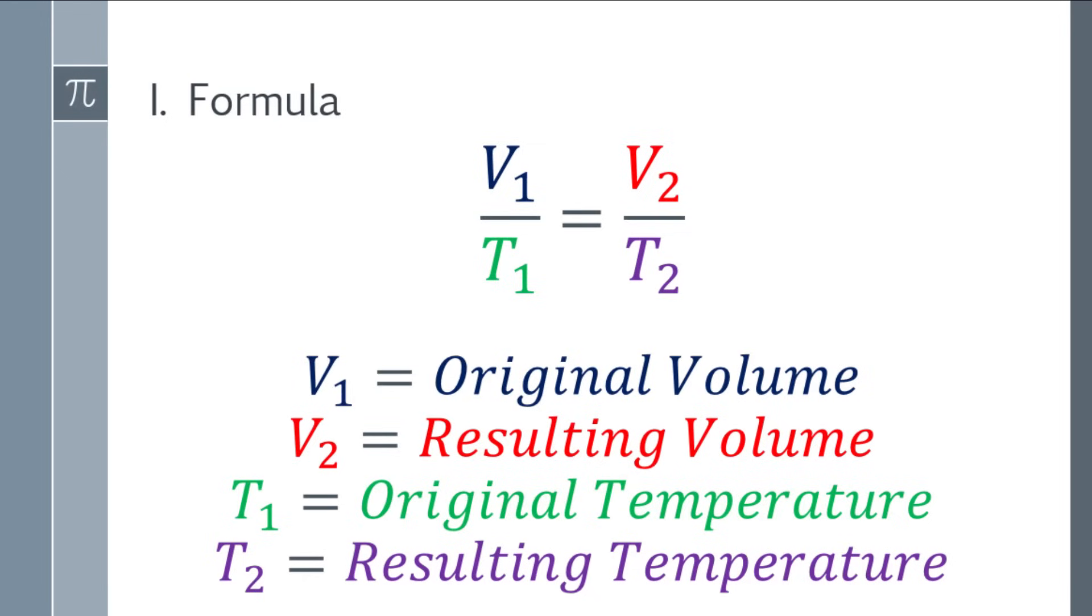Okay, so let's start with the formula. Charles' law involves volume and temperature. The formula is V1 over T1 equals V2 over T2. V1 is the original volume, V2 is the resulting volume, T1 is the original temperature, and T2 is the resulting temperature.